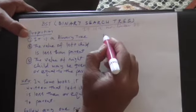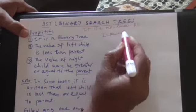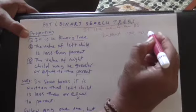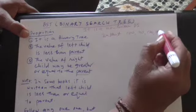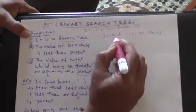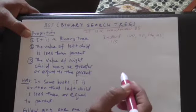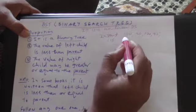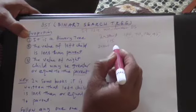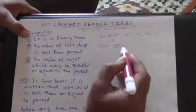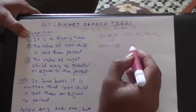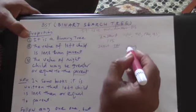Now let us insert some elements — 100, 90, 120, 95, 115 — into a binary search tree. First I insert 100. As there is no binary search tree at all, it is empty, so I make it the root node.